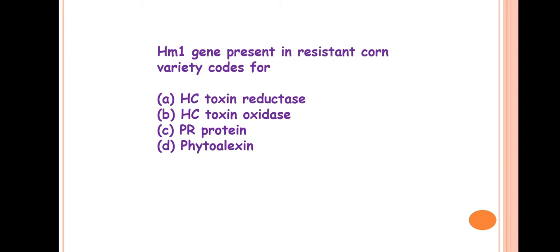Next question is: HM1 gene present in resistant corn varieties codes for? So the answer is Hc toxin reductase. HM1 is a resistance gene and this is the first resistance gene which was first cloned. So the first cloned resistance gene is HM1 gene, that is in corn or maize. It imparts resistance against Helminthosporium carbonum, which produces the Hc toxin. This resistant variety or resistant gene produces an enzyme to detoxify the Hc toxin, and that enzyme is Hc toxin reductase.